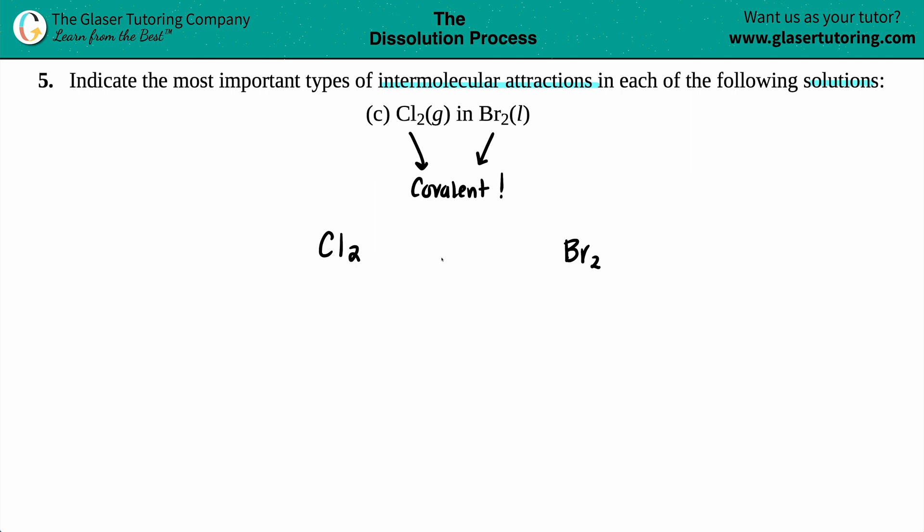See if your Lewis structure matches mine. In this case, we have Cl2 and Br2. These are halogens, so they have one bond each and then three lone pairs around each atom. After we do this, we have to figure out if this is a polar or non-polar molecule.